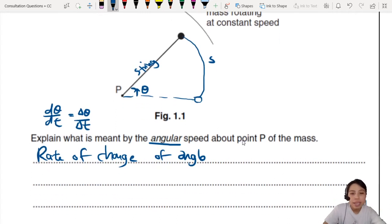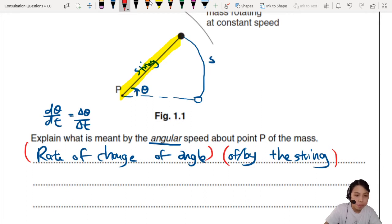The way to talk about this one is to say it is a rate of change of angle, also known as dθ/dt. Or at this level we can still say Δθ/Δt. Rate of change of the angle. But look very carefully, this one can gain us two marks.